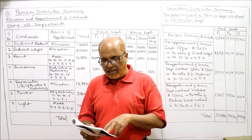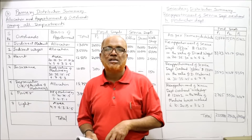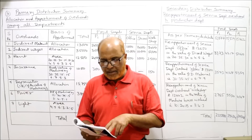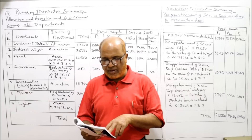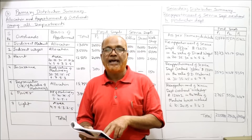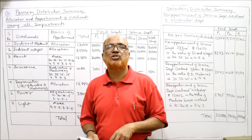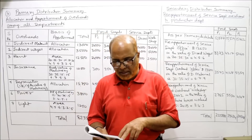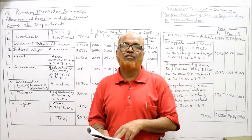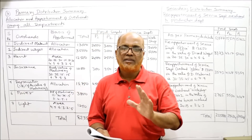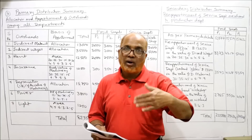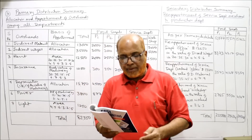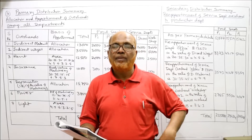Indirect material and indirect wages will be taken into account for all departments. Area in square meters is given, showing how much area each department occupies. Book value of machinery is given, total HP of machines is given — this is the first problem where horsepower of machine is given — and machine hours worked is given for P1, P2, P3.